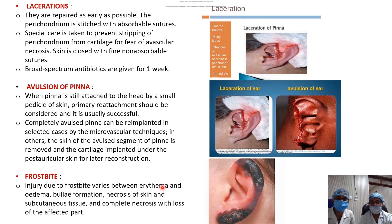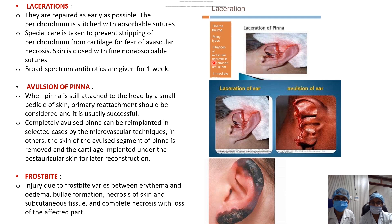Lacerations or avulsion of the pinna are caused by sharp injury and should be repaired as early as possible in layers. The perichondrium is stitched with absorbable sutures, taking care not to strip it from the cartilage, as this is the main blood supply and stripping may cause avascular necrosis. Skin is closed with non-absorbable sutures and antibiotics are given for one week. In complete avulsion, the pinna can be re-implanted in selected cases using microvascular techniques; otherwise, the skin of the avulsed segment is removed and cartilage implanted under postauricular skin for later reconstruction.